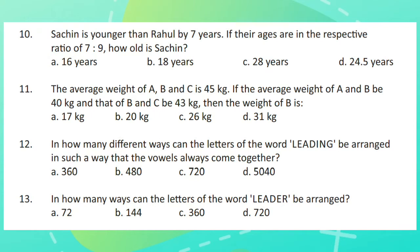Question 10. Sachin is younger than Rahul by 7 years. If their ages are in the respective ratio of 7 is to 9, how old is Sachin?